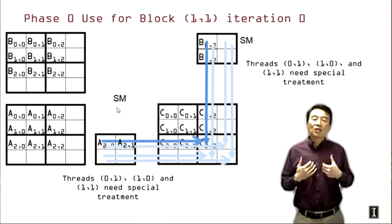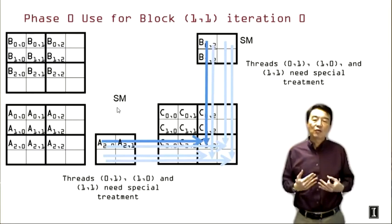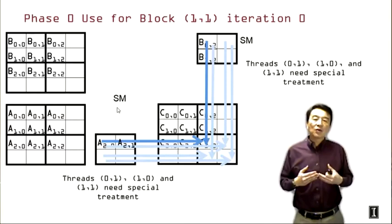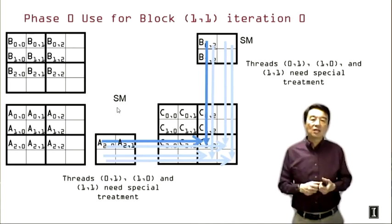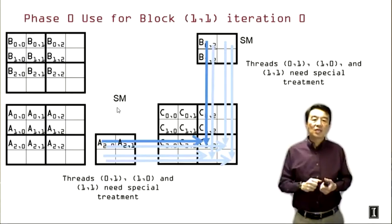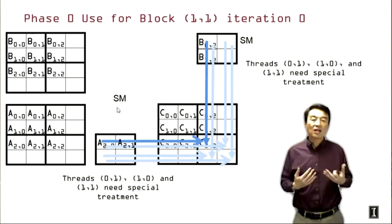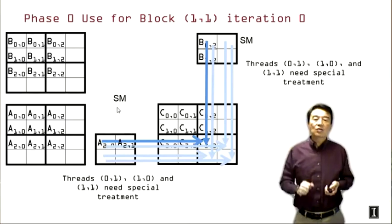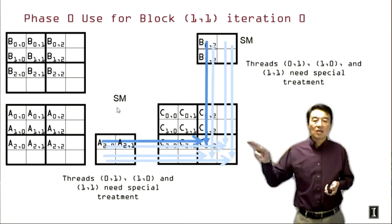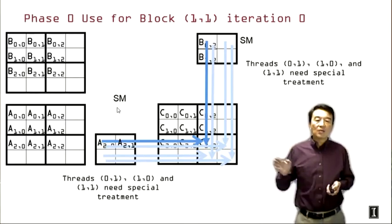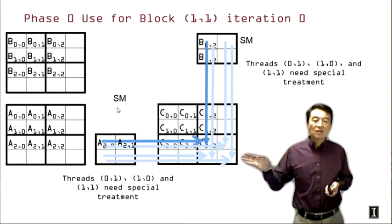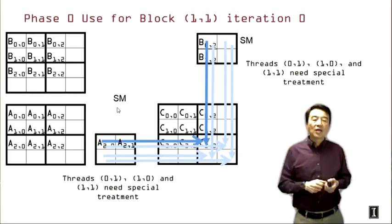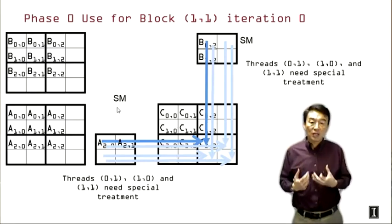So here we also show that even for the use of each phase, the situation can vary from block to block. So remember during iteration zero of block 0,0, all the threads were using valid data. However, in this case, we see that in iteration zero, thread 0,1 will be using invalid data. So we actually have a situation where in all iterations, we could be using invalid data for the calculation. And we also see that we have several threads that are attempting to calculate for elements that are non-existing in the C matrix. So in this case, all the three non-existing elements are outside the allocated range of C. So any writes into these elements can potentially trigger memory protection error and terminate the kernel.